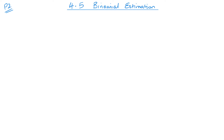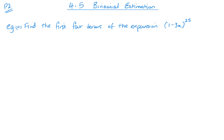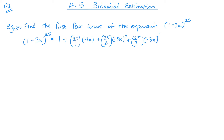Let's get stuck into a question. The first part will always involve some sort of expansion: expand the first four terms of (1 − 3x)^25. And there we have it — I've sped that up a little bit since we already know how to do this.